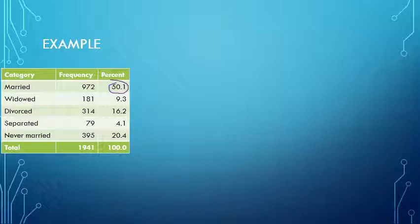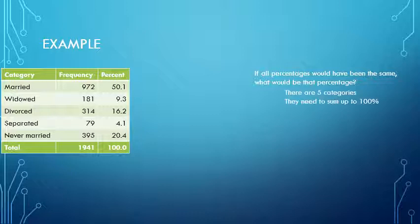We have almost 50% in one category, which is quite different from 4.1%, but we want to test if these differences would also occur not only in the sample but also in the population. If all percentages were the same, what would that percentage be? Well, we have five categories that need to sum to 100%, so 100 divided by 5 would mean 20% each.